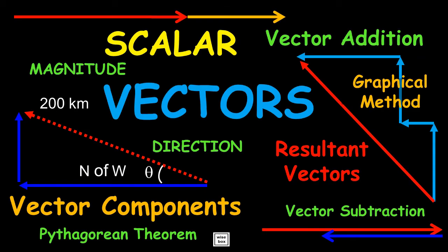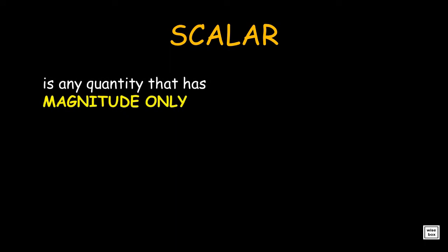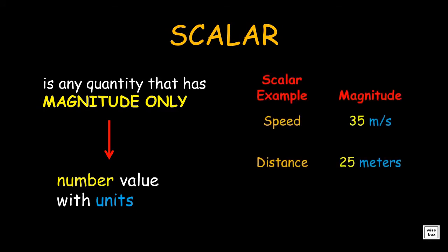Vectors and Scalar Quantities. A scalar is any quantity that has magnitude only. This means it has a number value with units. Some examples are speed and distance.